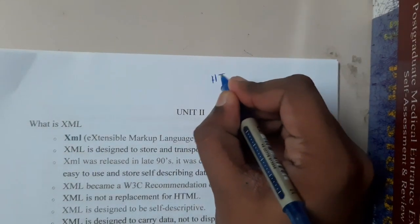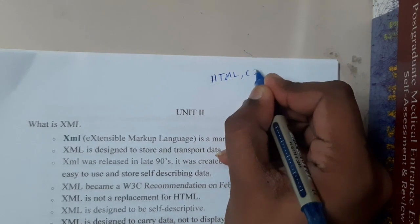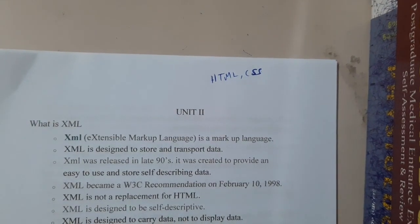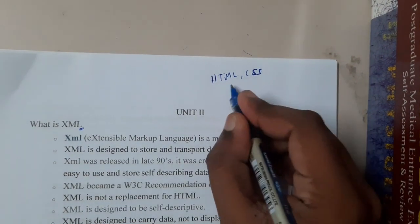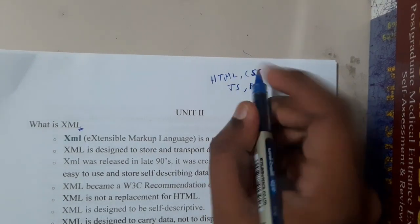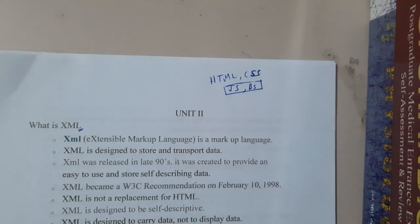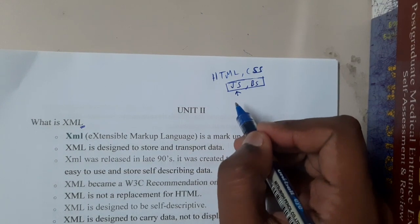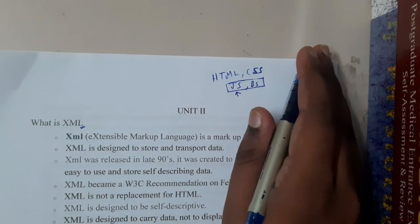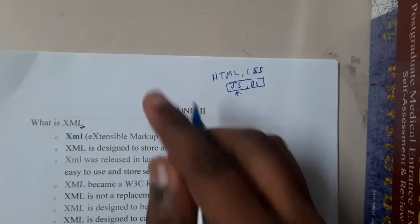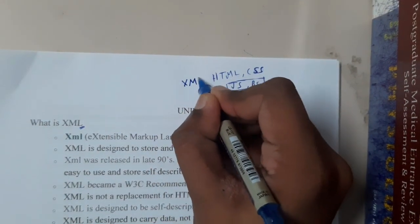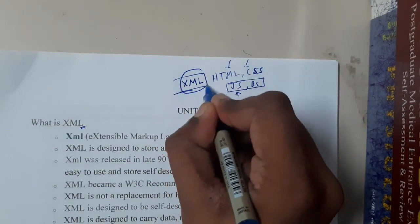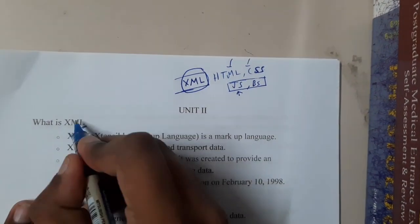We discussed about HTML and some introduction about CSS. So now your question is: why XML? I also mentioned JavaScript and Bootstrap briefly in a previous lecture. JavaScript will be covered completely in the next unit. In this unit, we will be discussing about XML. So what is the drawback that caused the introduction of XML?